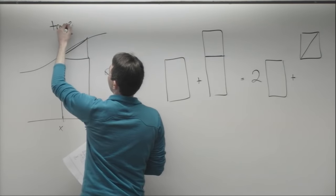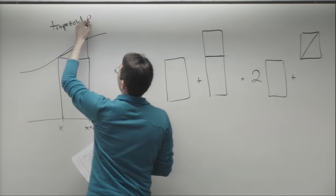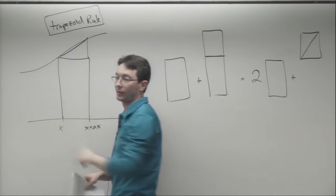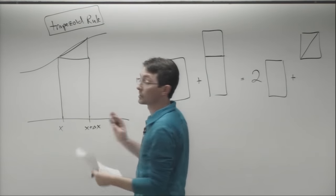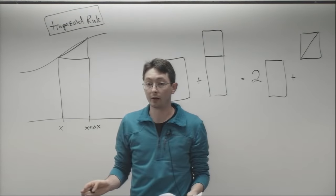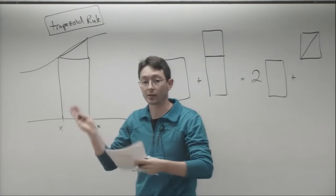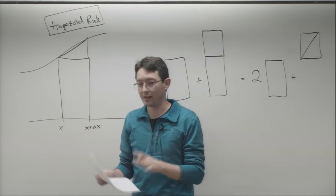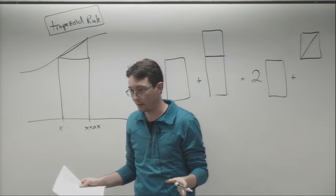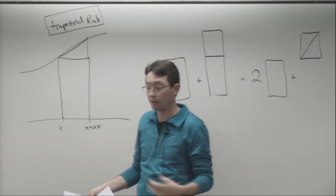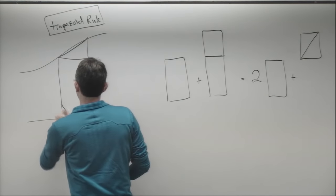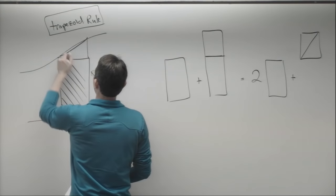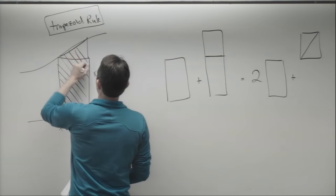This is called trapezoidal integration — the trapezoid rule. This is really what most people do on a first pass of trying to integrate a function. It's not the best integration, but it's cheap, it's easy, it's intuitive, and it does a pretty good job because we're essentially averaging the left and right rectangle rules.